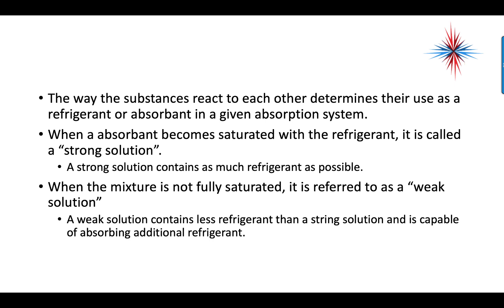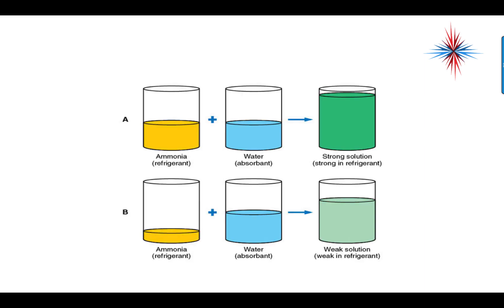When an absorbent becomes saturated with the refrigerant, it's called a strong solution — it contains as much refrigerant as possible. When the mixture is not fully saturated, it's referred to as a weak solution. When we have ammonia as the refrigerant and water in equal amounts as the absorbent, we have a strong solution. When we have a little ammonia and a lot of water, it's a weak solution — weak in refrigerant.